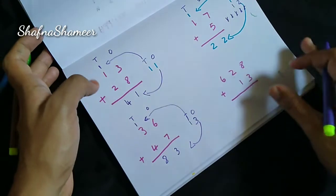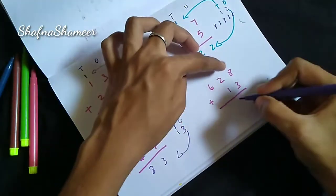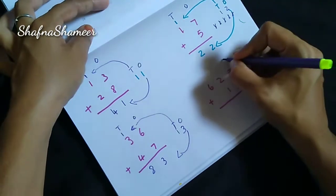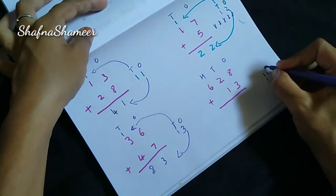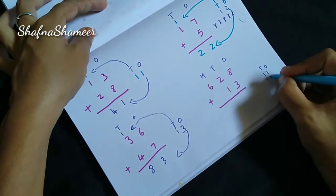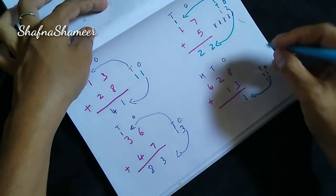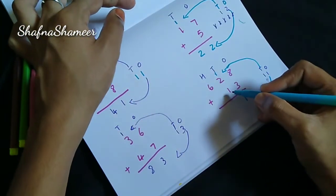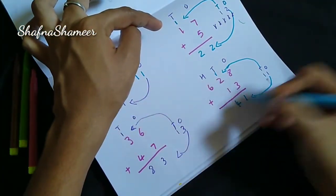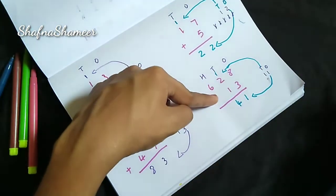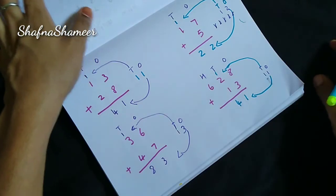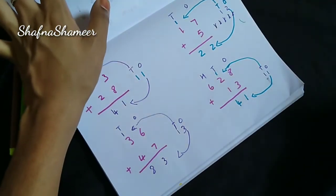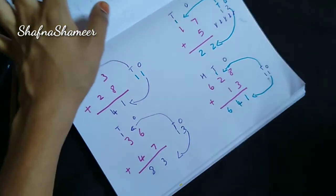3-digit number. I will write here: 3 digits. 8 plus 3 is 11. Ones, tens, hundreds — 11. The answer here is 641.